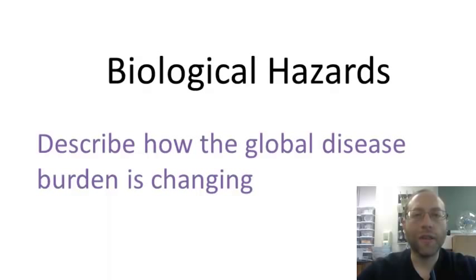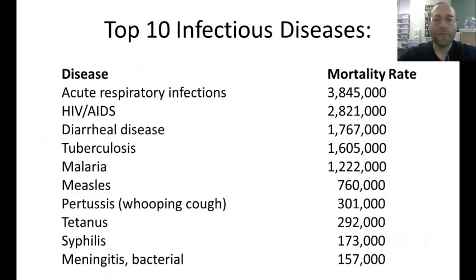Hello. In this vodcast we're looking at biological hazards, and our objective is to describe how the global disease burden is changing. Here are the top 10 infectious diseases worldwide, and one thing you may notice is that some of these are not all that common around here. While I learned about AIDS and sometimes meningitis rears its head, most of these we don't see. Malaria is basically unknown here in the United States, and tuberculosis we don't see all that much. People here get diarrhea but they don't die from it.